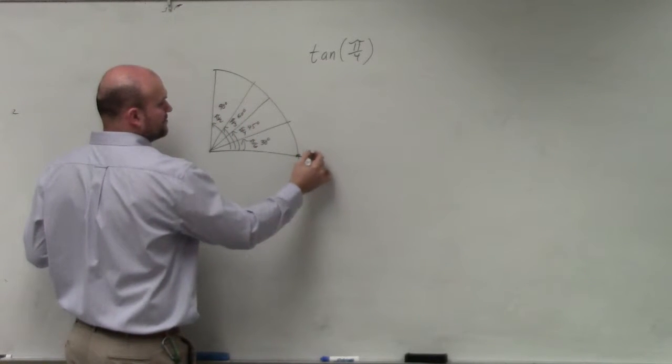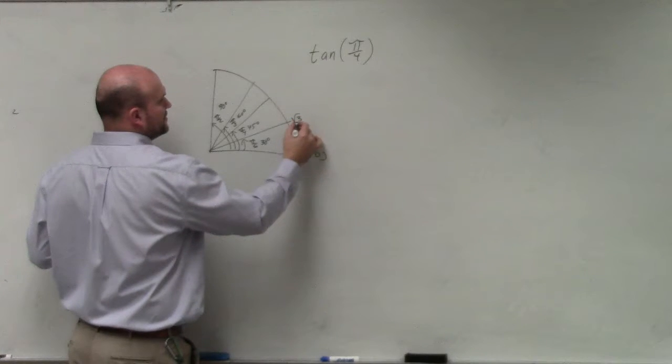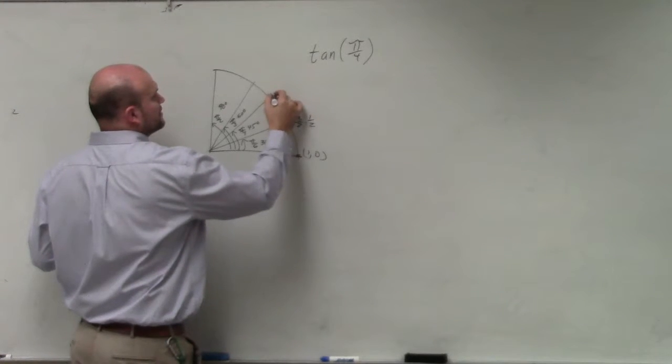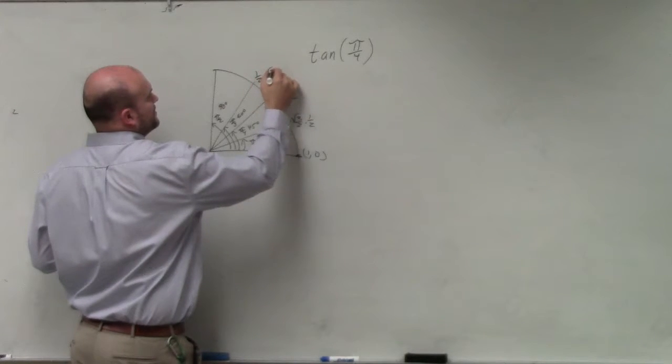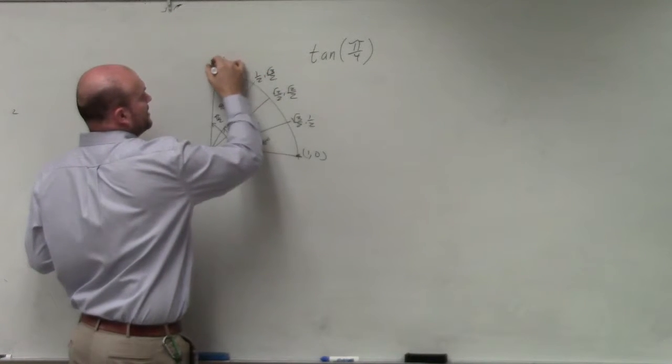These have coordinate points: (1, 0), (square root of 3 over 2, 1 half), (square root of 2 over 2, square root of 2 over 2), (1 half, square root of 3 over 2), (0, 1).